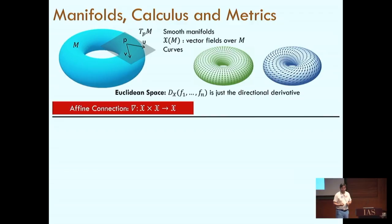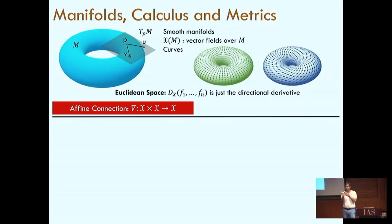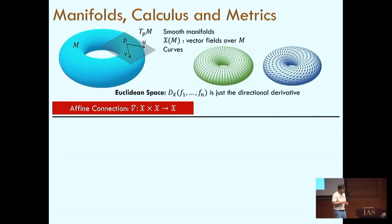The affine connection operator, nabla, acts on two vector fields and outputs another vector field — an analog of the directional derivative. We require some nice properties: it should be consistent with Euclidean geometry. There are natural properties inspired by looking at what the directional derivative should satisfy. These include linearity with respect to the vector field being differentiated as well as the vector field with respect to which we differentiate, and also the Leibniz rule. We have a choice in picking an affine connection as long as it satisfies these axiomatic properties.